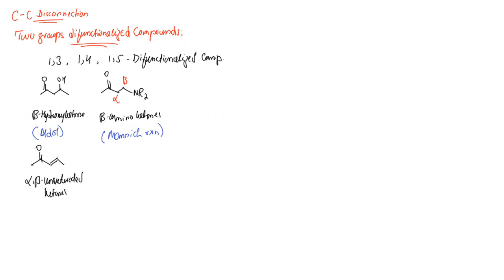Another important category of 1,3 relationship is exhibited by compounds in which we have two carbonyl groups at the beta position — these are known as beta-diketones. They can also exist as esters, and we can obtain these compounds through Claisen ester condensation.